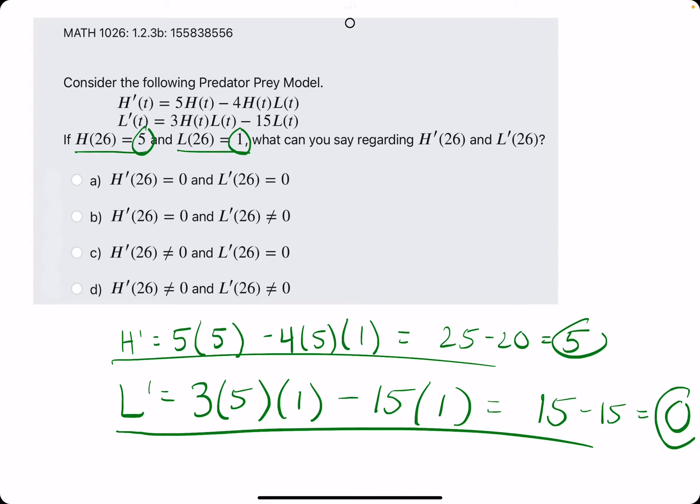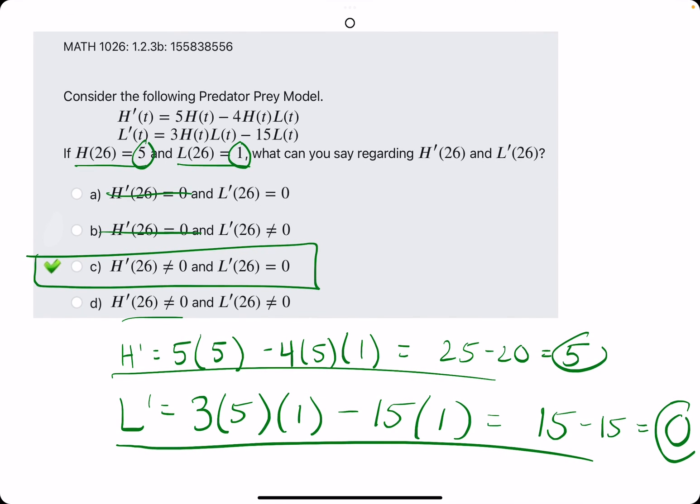So we have h prime is equal to 5, which means h prime is not equal to 0. And then l prime is equal to 0. So it looks like h prime not equal to 0, l prime equal to 0 is option c. Let's break up the eraser to see that c is, in fact, our answer. Alright.